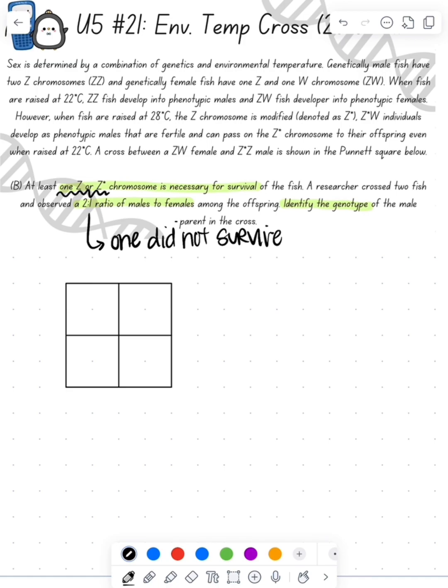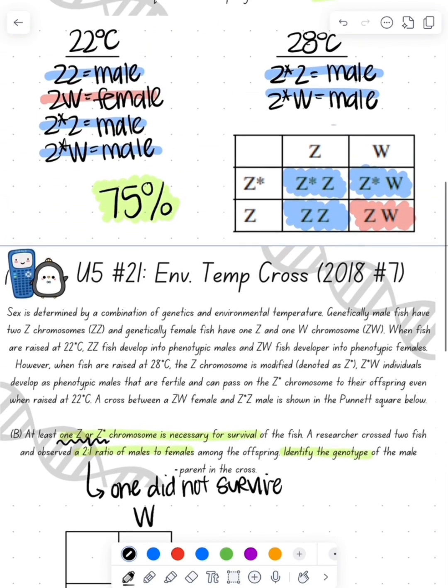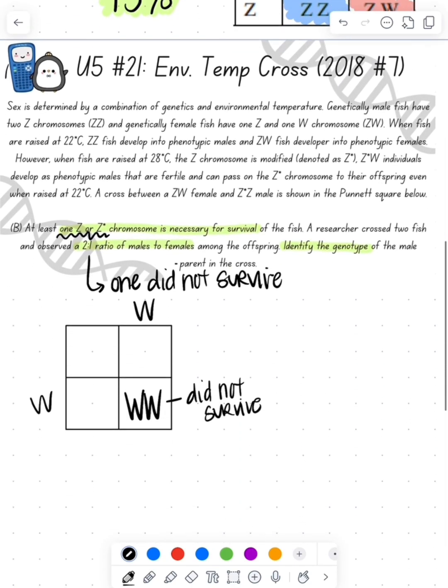Since we know that one doesn't survive, that means one of them must be WW because that one didn't survive. So we know that each of the parents is going to have a W in its genotype. The first one—ZW is going to be a female. So we fill that one in.